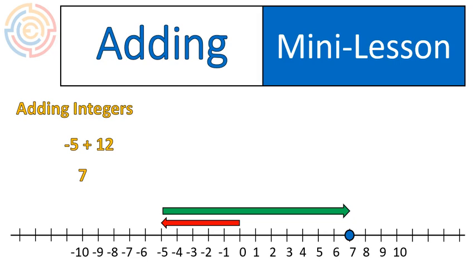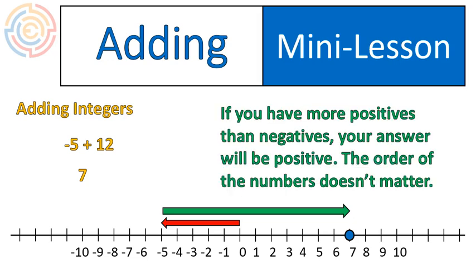In this example, you can see that if you have more positives than negatives, your answer will end up being positive. So the order of the numbers does not matter. What matters is, do you have more positives or more negatives? In our previous example, we had more negatives, so our final answer was negative. In this example, we have more positives, so our final answer is going to end up on the right of the 0, or in other words, be a positive number.